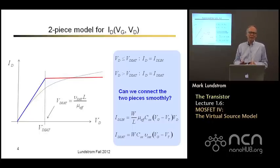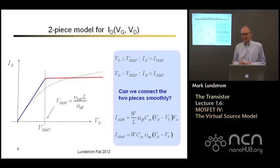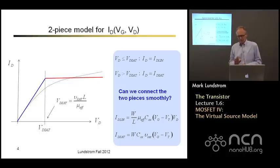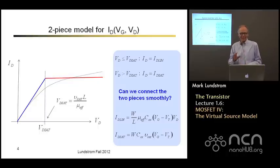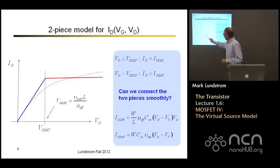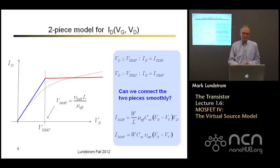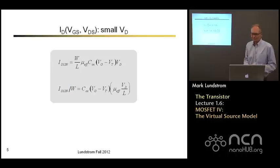We could do this mathematically, but then it gets very complicated and involves additional simplifying assumptions. Or we could do it empirically — and that's the essence of the virtual source model. It makes this connection empirically. So we have some physical expressions for the linear and saturated current, and we're now going to empirically connect these two.